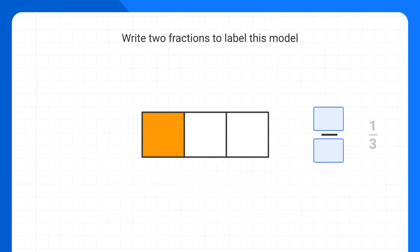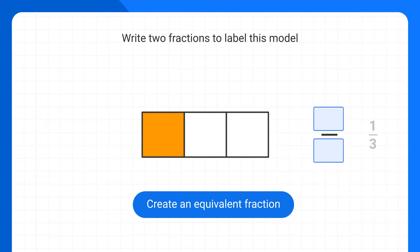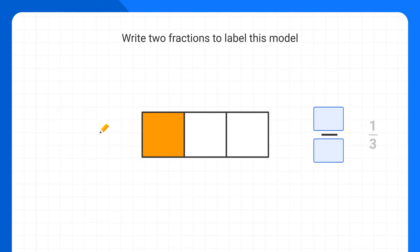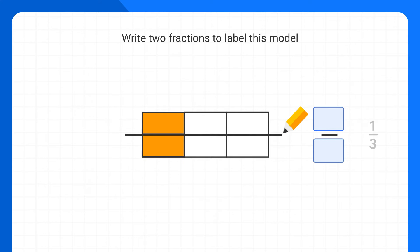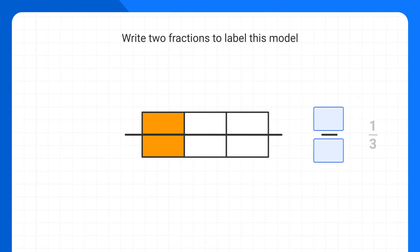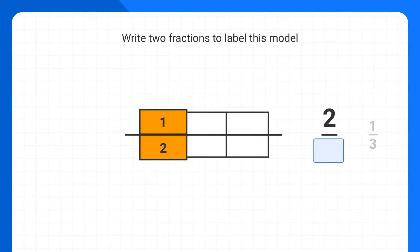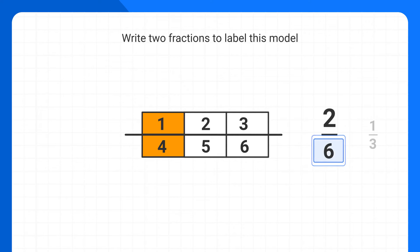Now, if we wanted a second fraction, we'll have to create an equivalent fraction. The way I do this is I take a pencil and draw a line to split each piece of the model into two smaller pieces, then do that for all of the parts of this model. Now I haven't changed the amount that's shaded, so my fraction's equivalent. But now I'll write my fraction in a different way, because now I have two shaded pieces out of a total of six pieces in all. So this is now the fraction two-sixths.